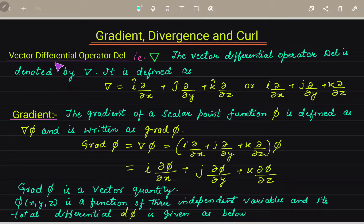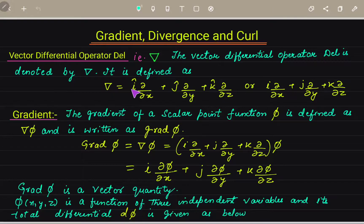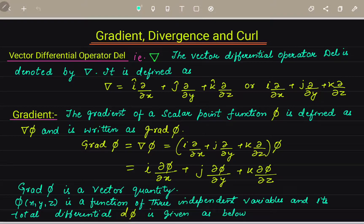The first definition is the vector differential operator denoted by del. The vector differential operator del is defined as: del equals unit vector i times del/del-x, plus unit vector j times del/del-y, plus unit vector k times del/del-z, or we can write it in this way also.